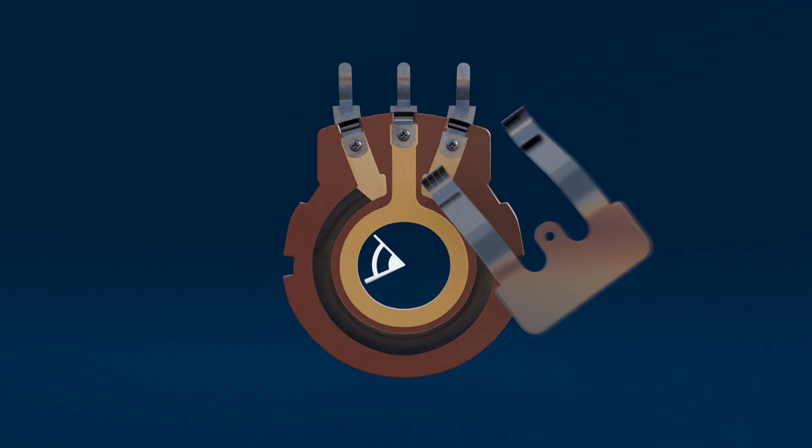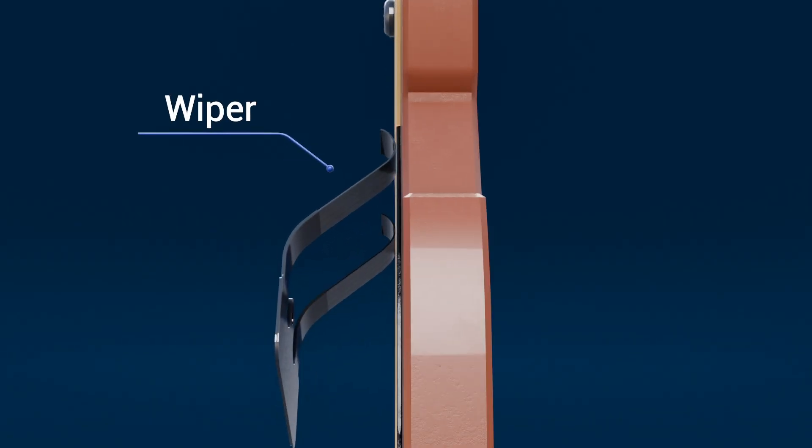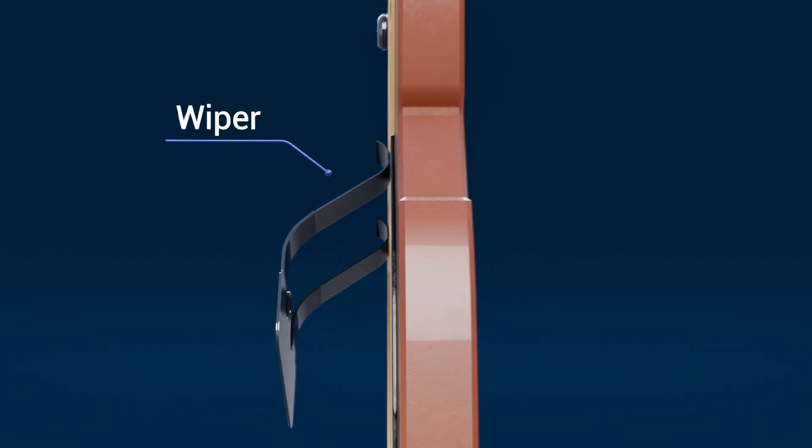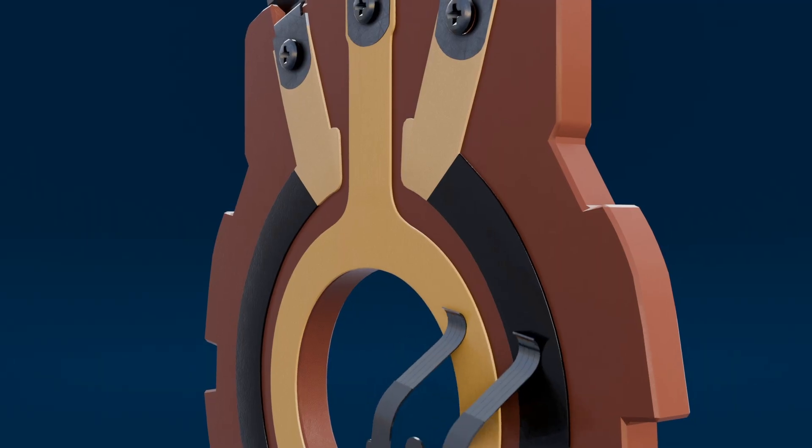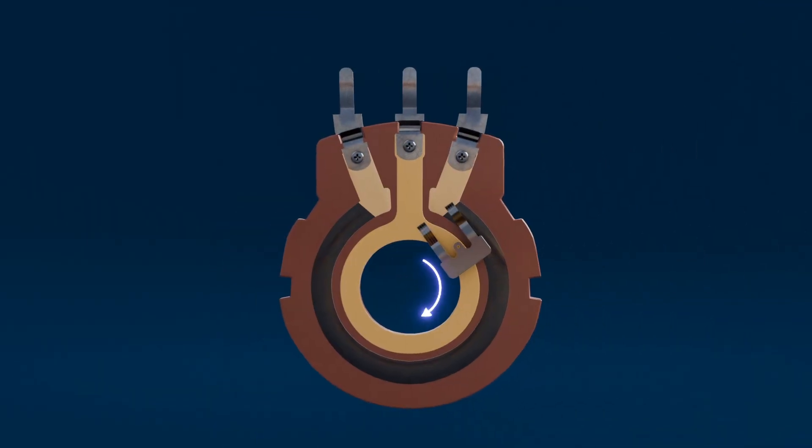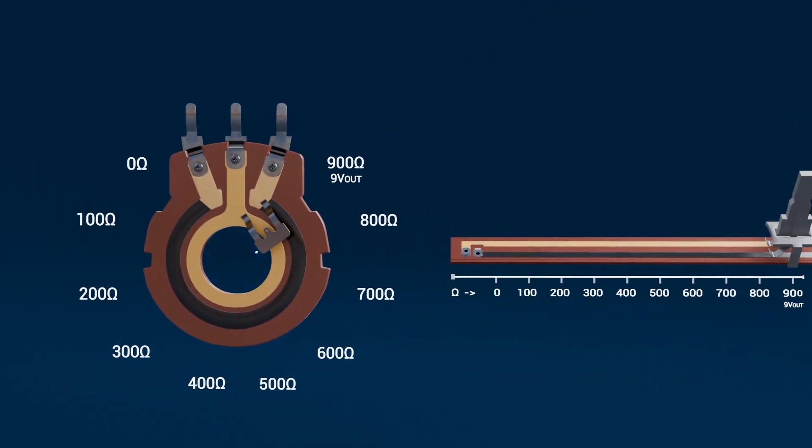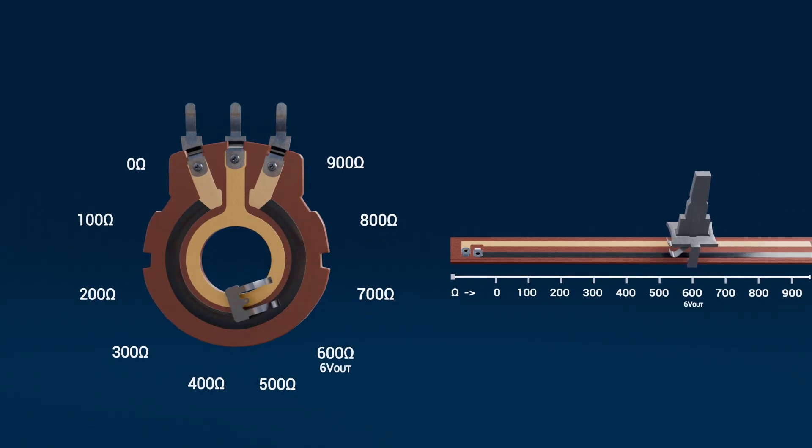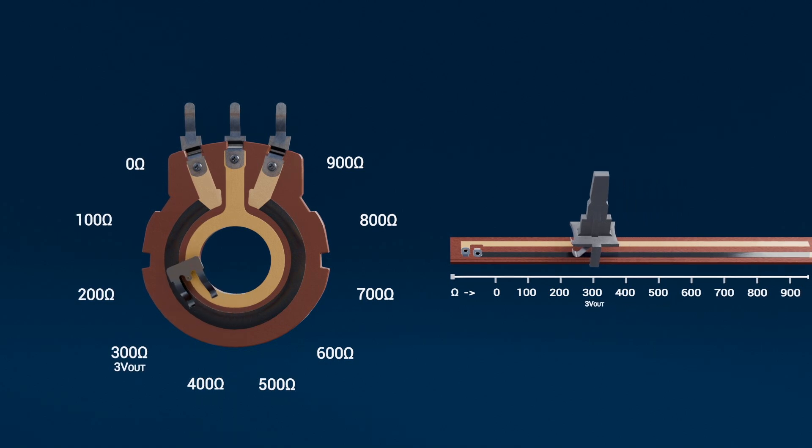Resting on top of that track is the wiper. This is a small, springy metal contact that physically moves along the resistive surface. When you twist the knob or slide the fader, the wiper shifts position, tapping into a different point on the track. That movement is what changes the resistance seen at the wiper terminal, and therefore the output voltage in a voltage divider setup.